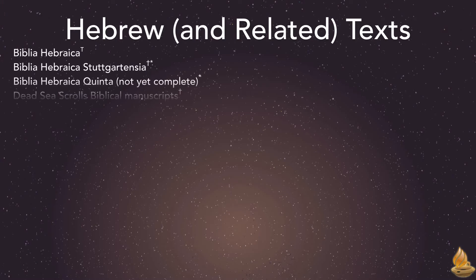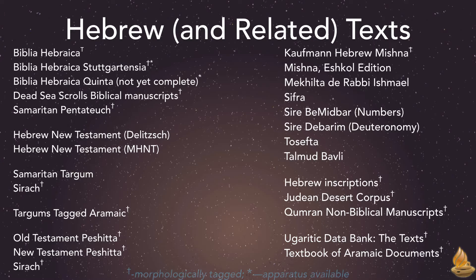Accordance offers a lot of Hebrew resources, covering biblical, post-biblical, and extra-biblical texts. We also offer select resources in Aramaic, Syriac, and Ugaritic. Texts marked with a dagger superscript are morphologically tagged, while the asterisk designates those that include a critical apparatus.